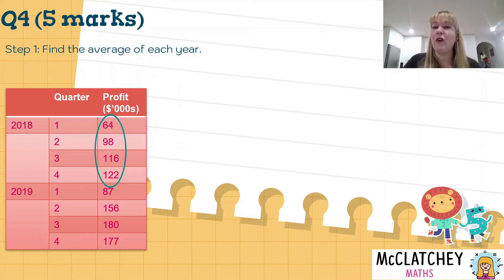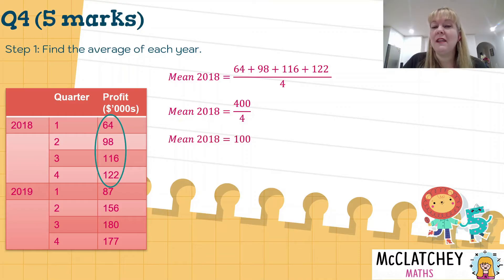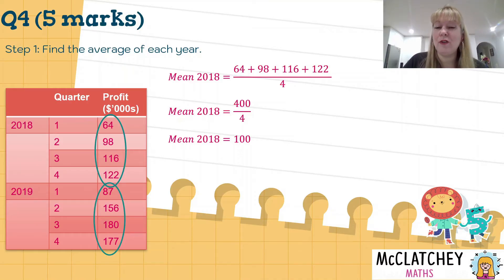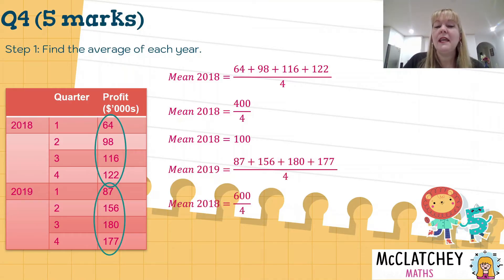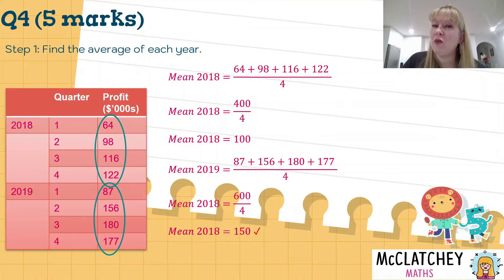Step one: find the average for each year. Starting with 2018, we do the sum of all values divided by how many values there are, which gives us a mean of 100 for 2018. We then repeat that for 2019 and calculate our mean again. If you got both means correct, you received a single mark.